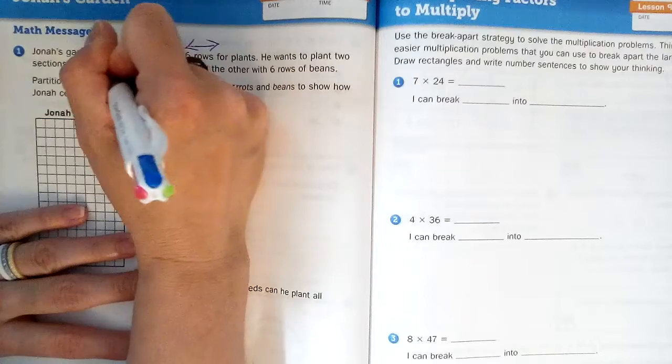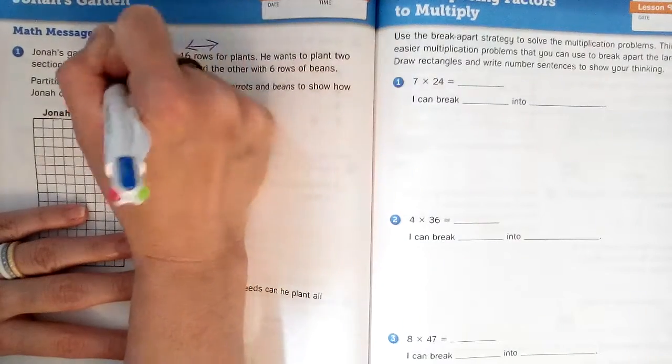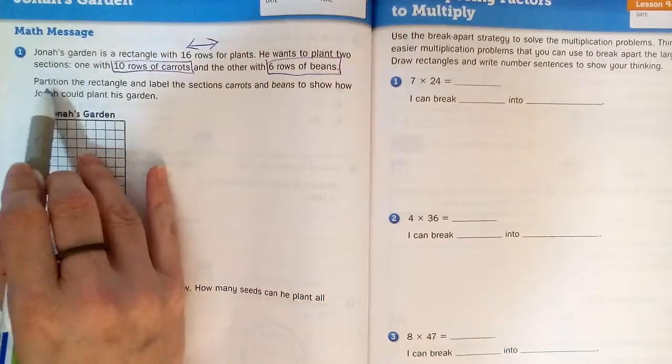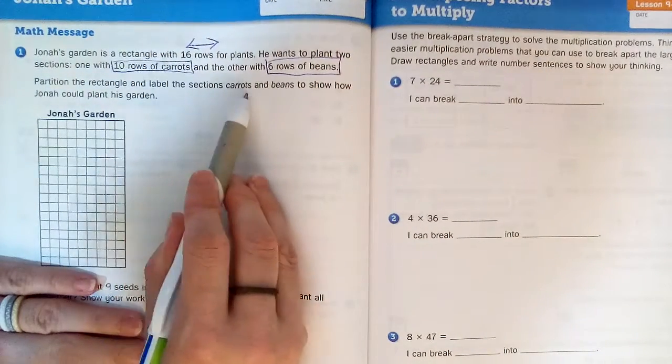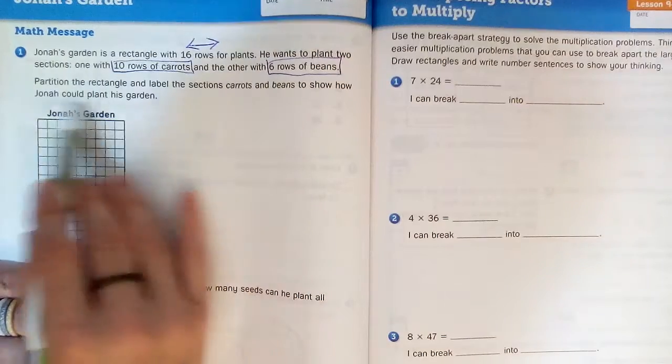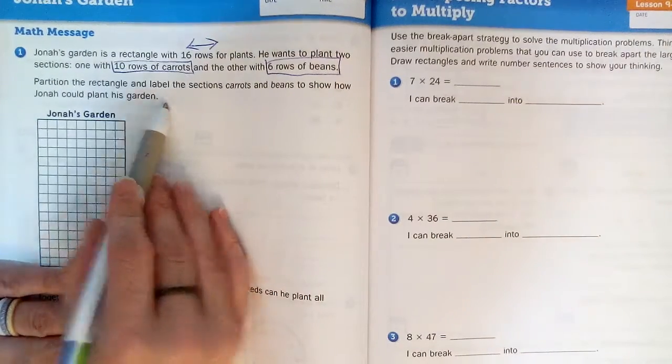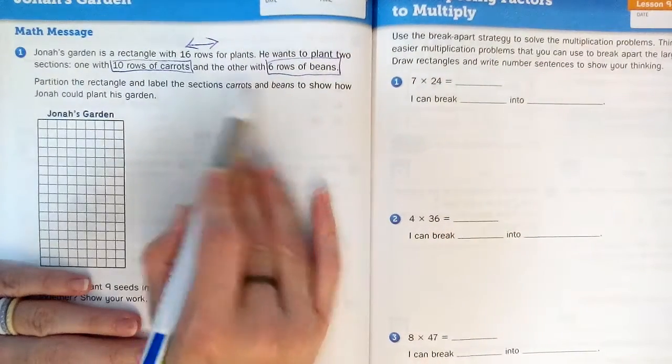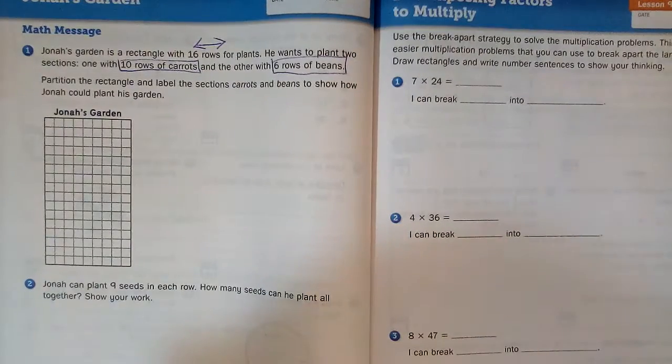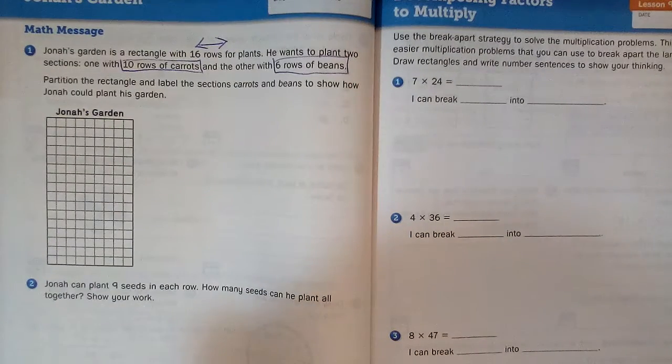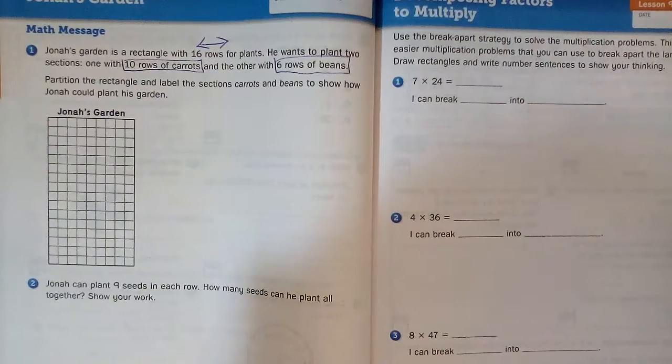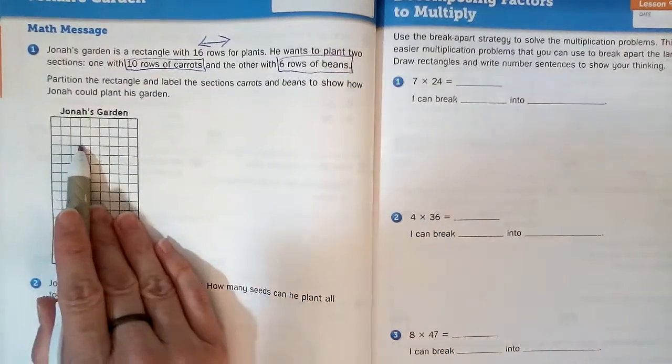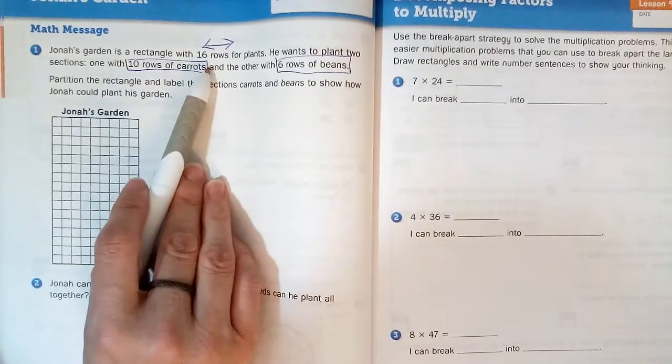Partition the rectangle and label the sections carrots and beans to show how Jonah could plant his garden. Partition means to break up, break it into parts, and label them carrots and beans. So what do we know about how many rows of carrots he needs? He needs ten and six of beans. So let's first check this. They said this rectangle has 16 rows.